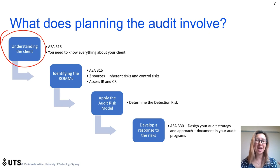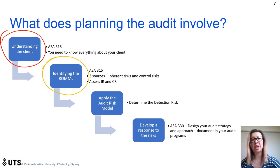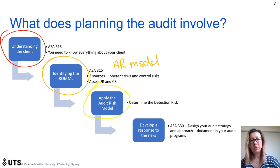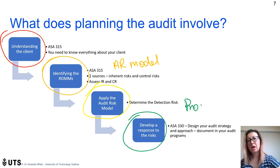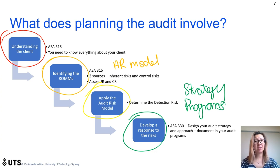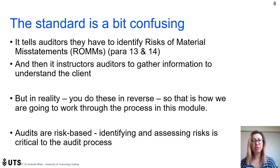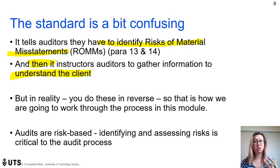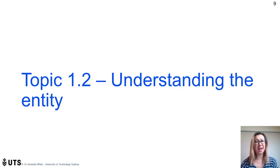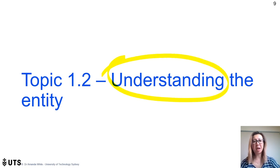Planning the audit starts with knowing the client — you can't plan any customized service unless you understand them. Then you identify risks of material misstatement, apply the audit risk model, and develop a response through audit programs and your overarching strategy. Although the standard lists risk identification before understanding the client, we're going to do them in reverse — understanding the client first, then getting into risk.